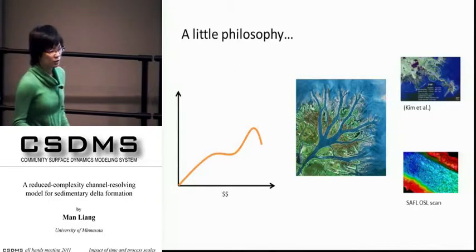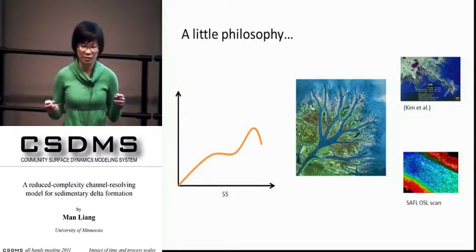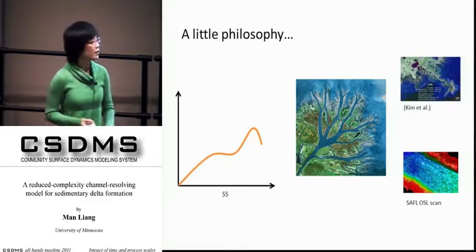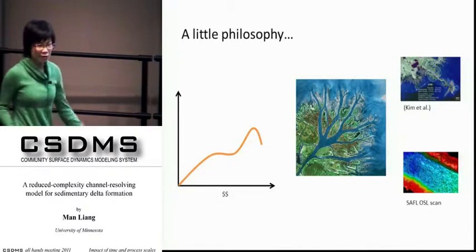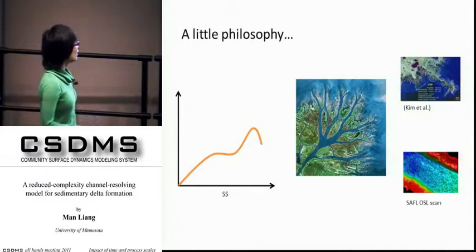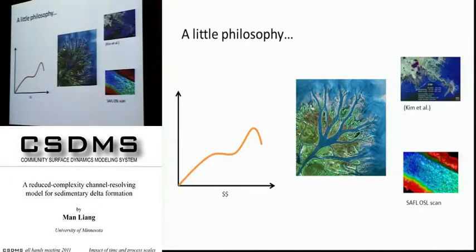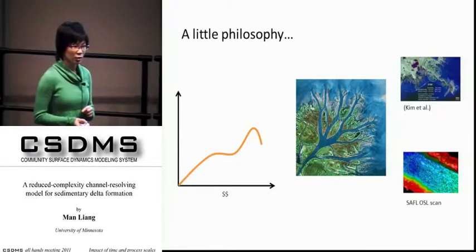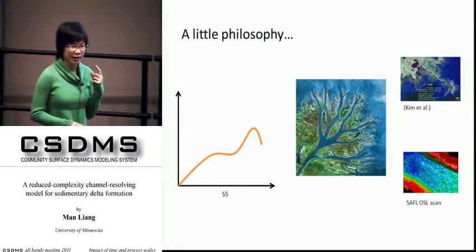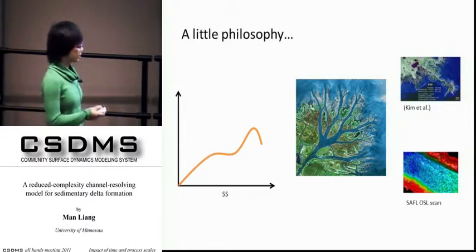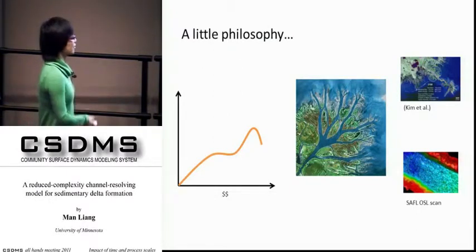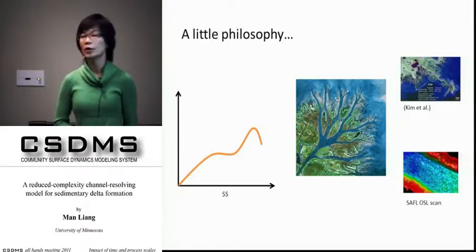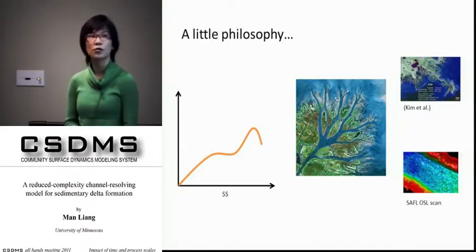As you try to put as much detail as possible in the model, it might just blow up and doesn't give what you want. So that's why I put this down curve here, saying that you never know what's going to happen. So the question is, to decide which model you want to use, you have to have this question in your mind: what is your purpose? So since I'm working on deltas, let's talk about deltas. This is a picture of Wax Lake Delta. Can we model it? What are the processes you need to include to grow something like this?